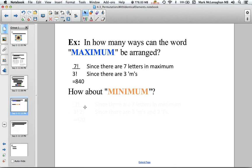Okay, MINIMUM. Okay, so again, we have seven letters. In this case, we have three M's and two I's. So we have seven factorial divided by three factorial times two factorial, which is 420 permutations.